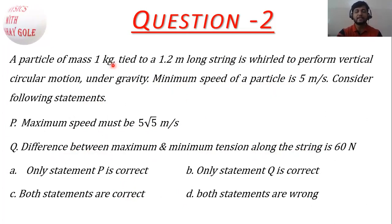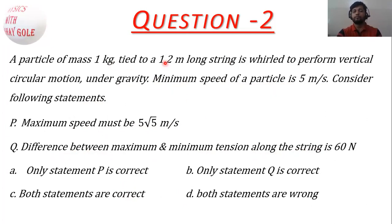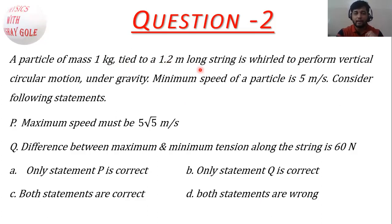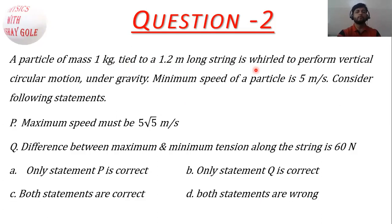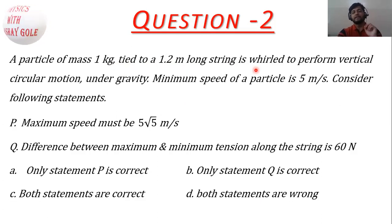So the question involves a 1 kg object attached to a 1.2 meter long string performing vertical circular motion. The minimum speed given is 5 meters per second.